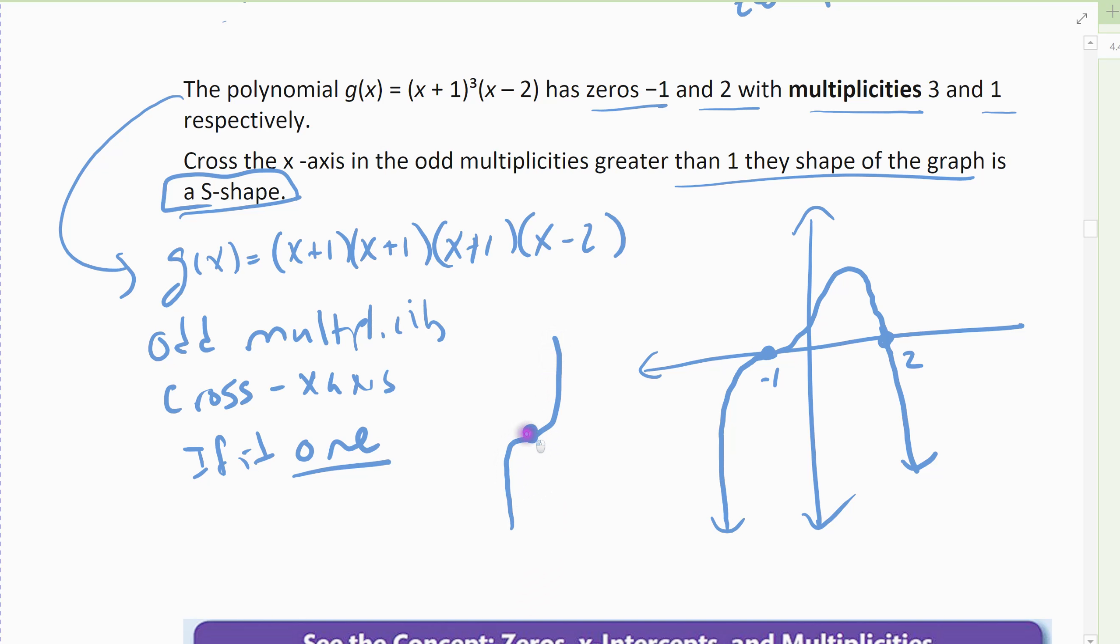At the 0, it kind of flattens out at the 0. This is when it has a multiplicity of like 3, 5, 7, an odd multiplicity that's bigger than 1. So an odd multiplicity that's bigger than 1. It crosses the x-axis, but it has sort of a kink in it, so those would be higher degree multiplicities.